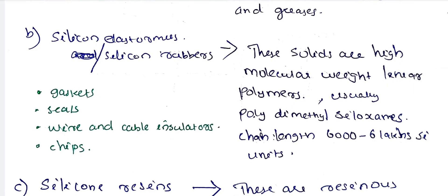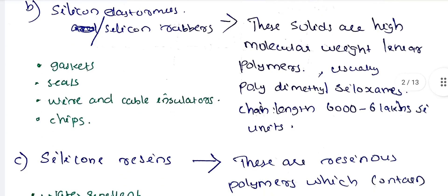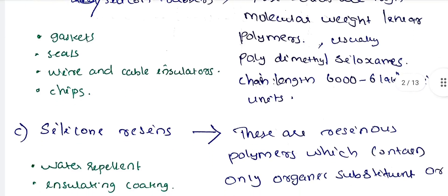Silicon elastomers, also called silicon rubbers, are used for gaskets, seals, chips, and wire and cable insulators. These are solid, high-molecular-weight linear polymers, usually polydimethylsiloxanes, with chain lengths of 6,000 to 6,000,000 silicon units.